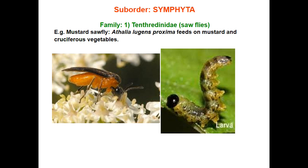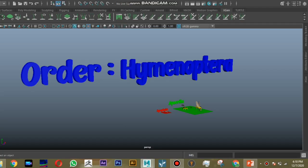In Hymenoptera, it is the only order where larvae, while feeding, usually have the posterior part of the body coiled over the edge of a leaf, causing damage. Example is mustard sawfly or cucurbit sawfly — Athalia lugens proxima — which feeds on mustard and cruciferous vegetables like broccoli leaves or cauliflower.